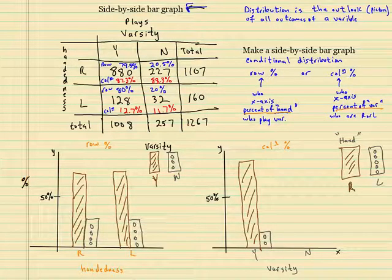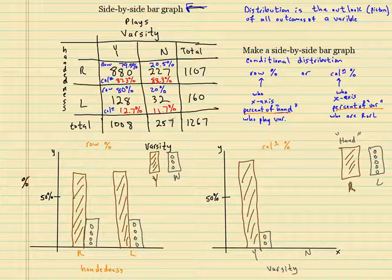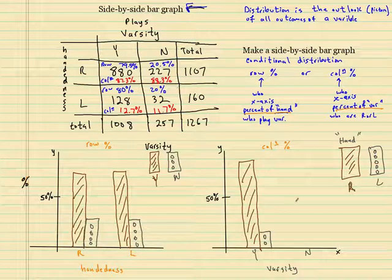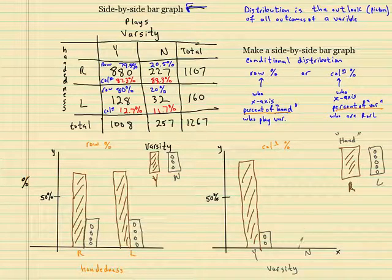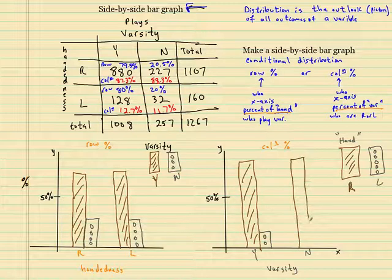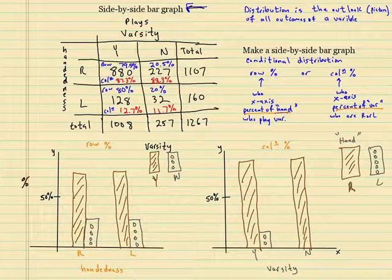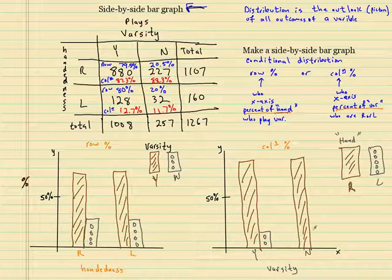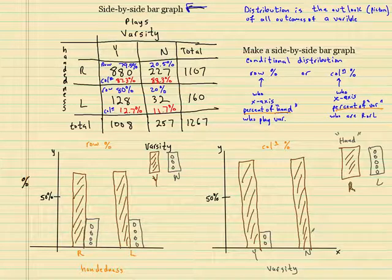What percentage of people who did not play? 250 people did not play varsity sports and 227 of them were righties. So that is 88.3, which is about the same as that. And the last option is the lefties that didn't play sports. A little less than this.